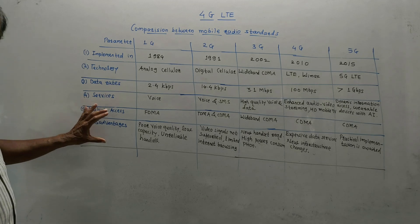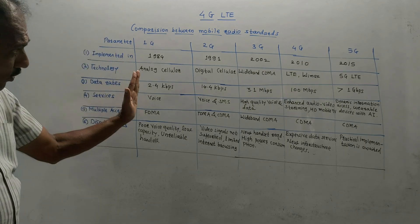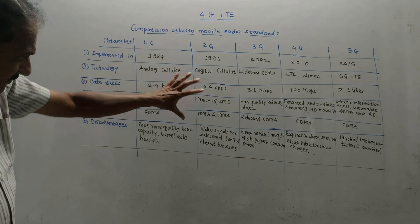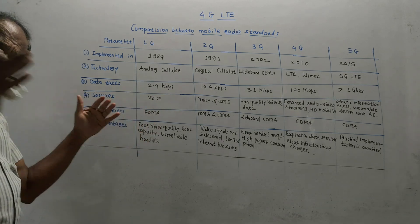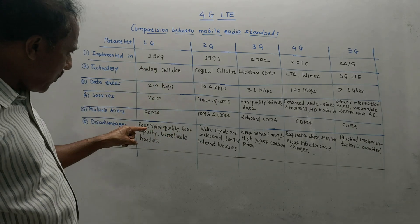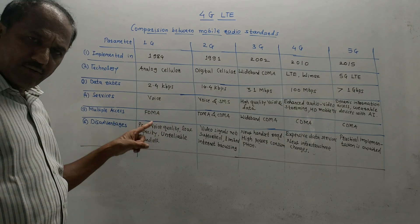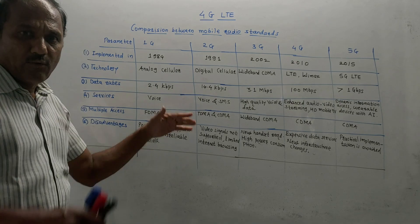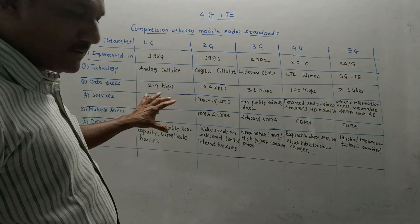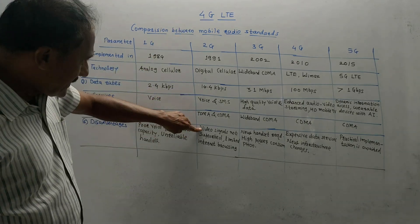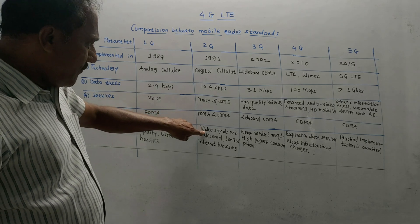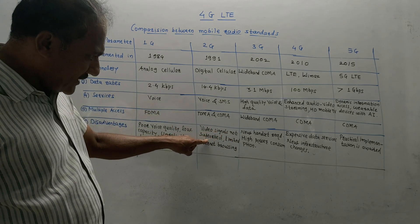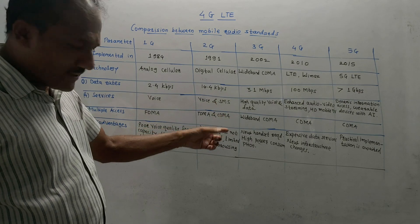Disadvantages you should know for each generation. For first generation, since it was a basic generation, poor voice quality was there, network was having low capacity, and unreliable handoff process. Second generation drawbacks: video signals were not supported, only audio signals were supported.